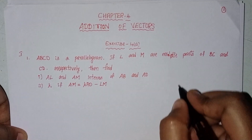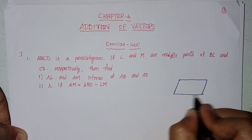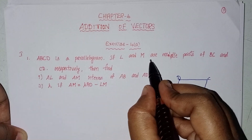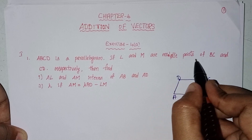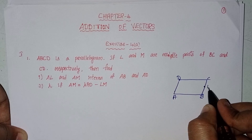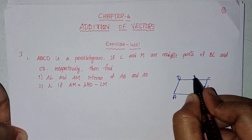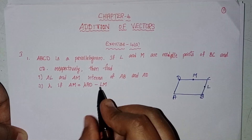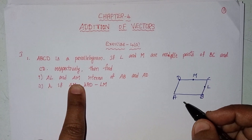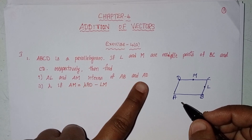ABCD is a parallelogram. If L and M are the midpoints of BC and CD respectively, we need to find AL and AM in terms of AB and AD.